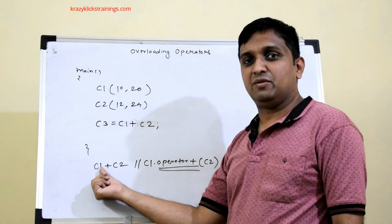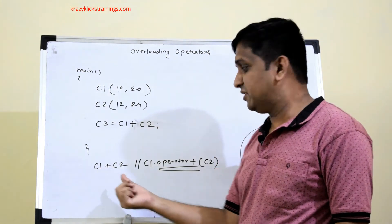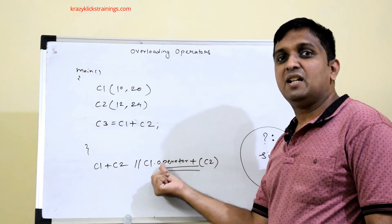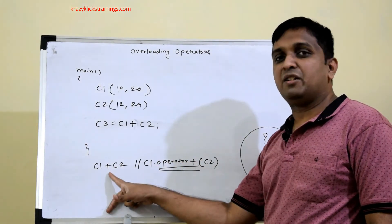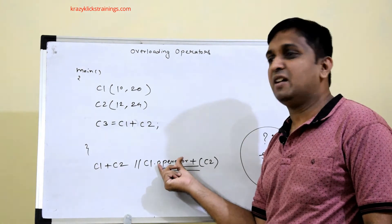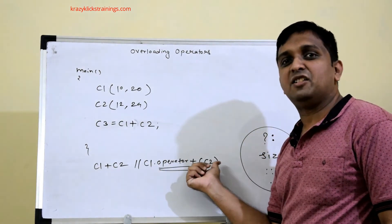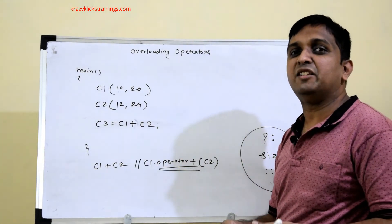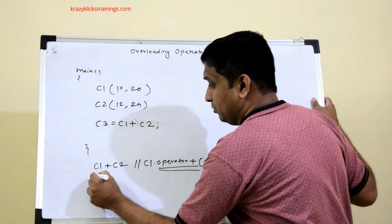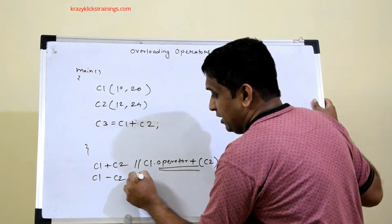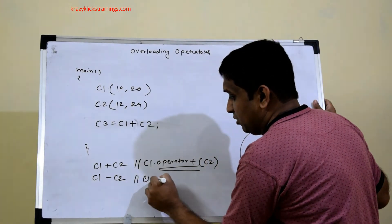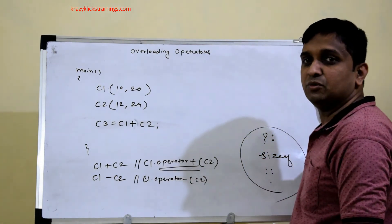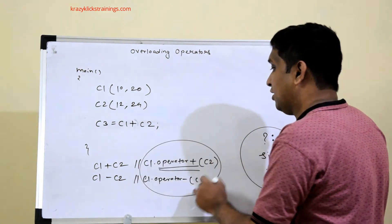For any binary operator, the first object on the left-hand side is taken as the function-invoking object. So it becomes c1.operator+, and the keyword 'operator' is followed by the operator symbol. The other object is passed inside the parentheses. Similarly, if I say c1 - c2, it will be treated as c1.operator-(c2).